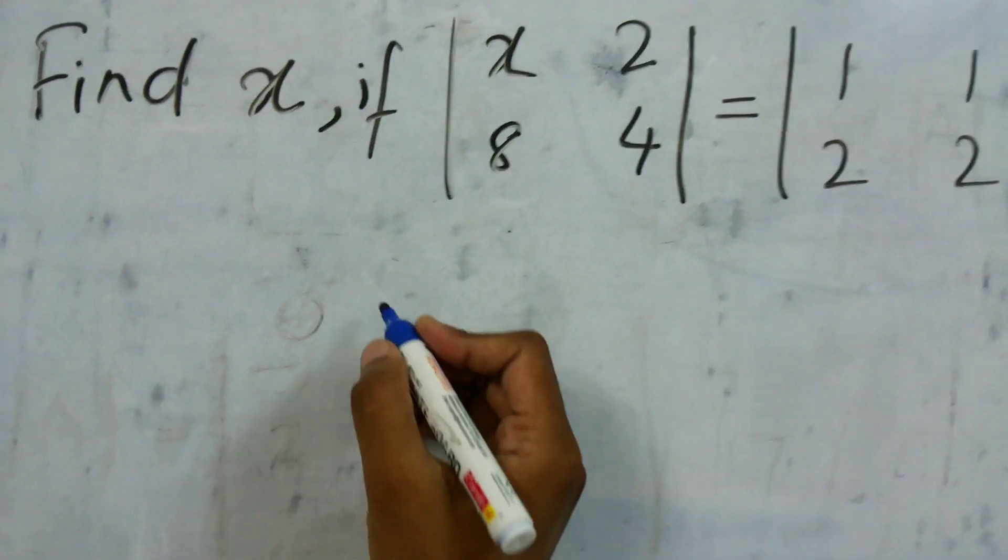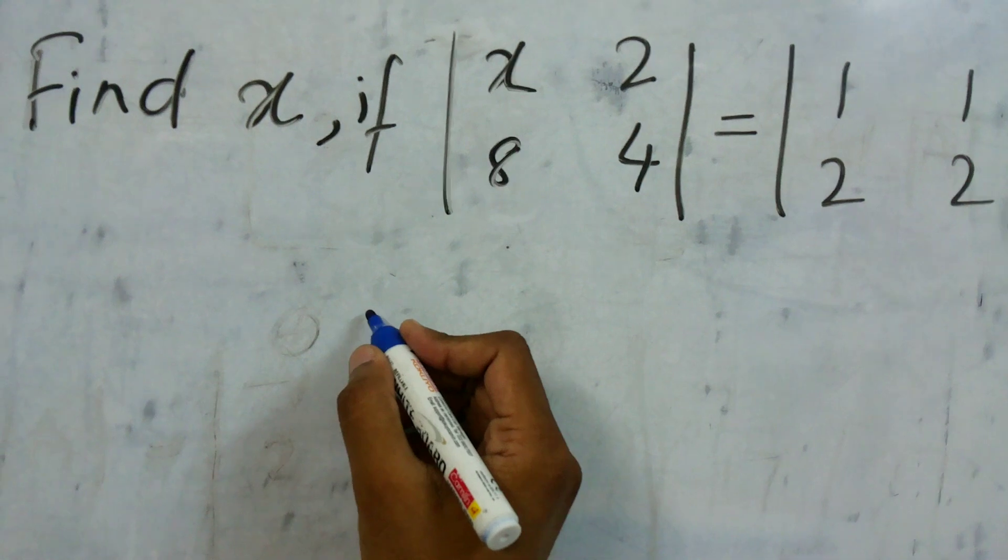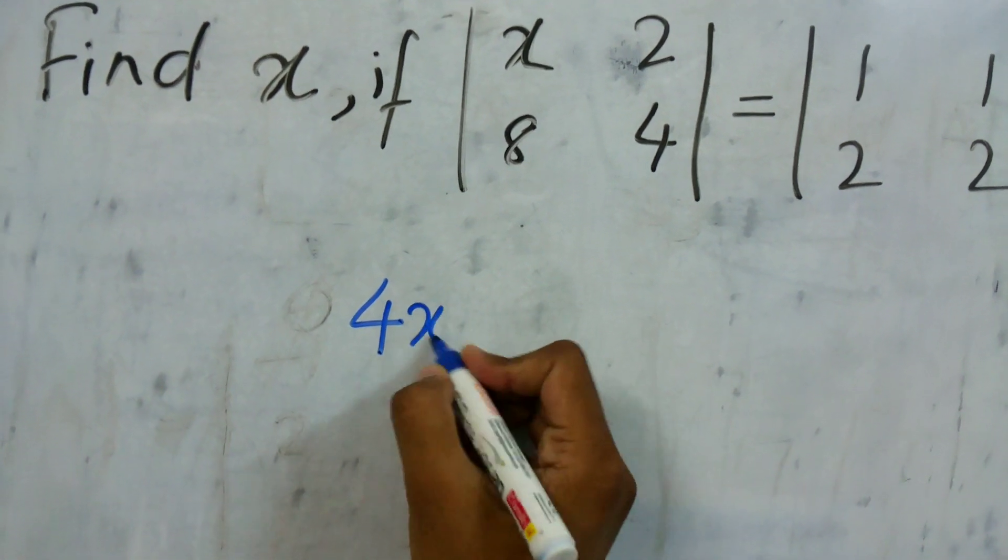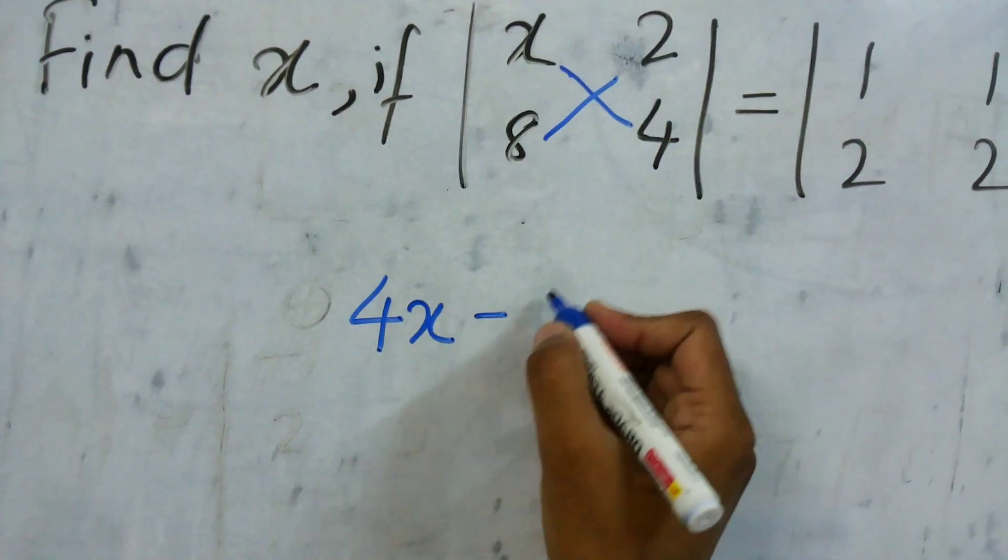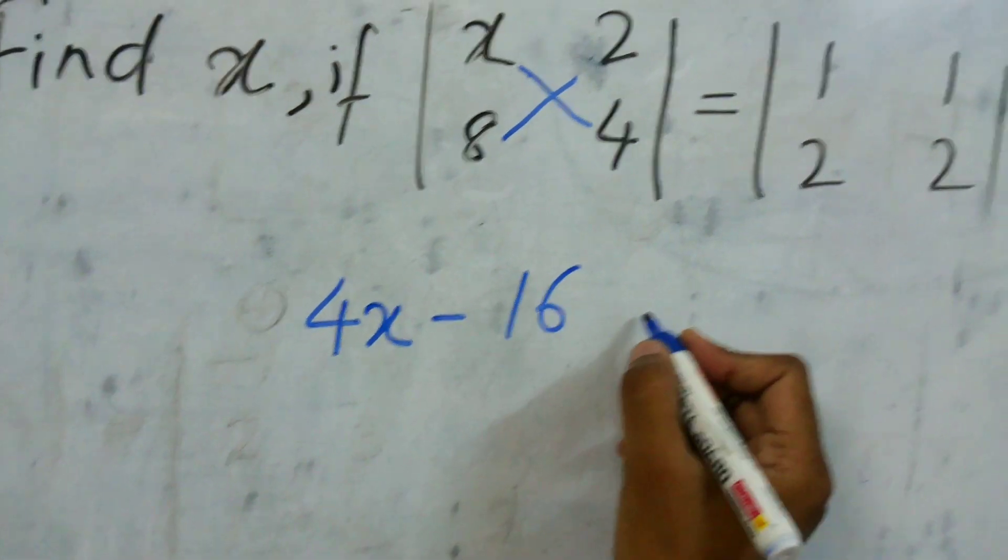So when we solve this, this will be x into 4 that is 4x minus 8 into 2. So it will be like this, 8 into 2 that is 16.